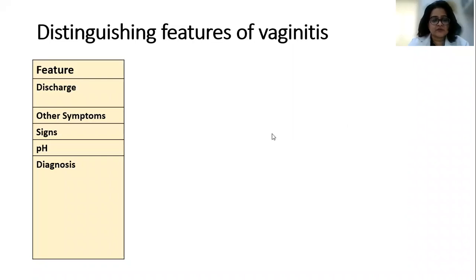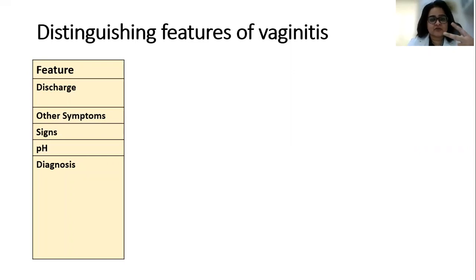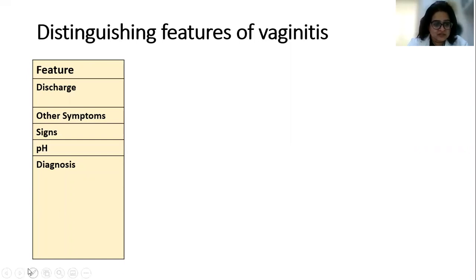In today's quick less-than-five-minute session, we will discuss the three important types of vaginitis: bacterial vaginosis, trichomoniasis, and vaginal candidiasis. These are the three most important types, and questions repeatedly come on this topic, so it is very important.